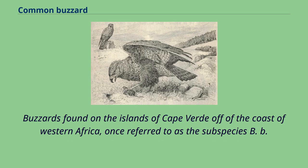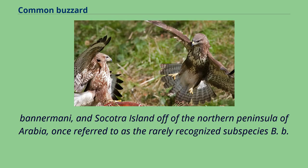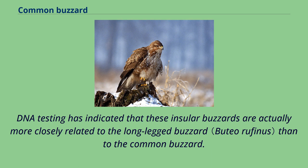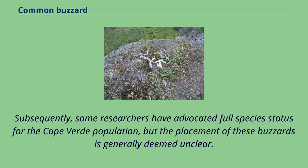Buzzards found on the islands of Cape Verde off the coast of western Africa, once referred to as the subspecies B. b. bannermani, and Socotra Island off the northern peninsula of Arabia, once referred to as the subspecies B. b. socotrae, are now generally thought not to belong to the common buzzard. DNA testing has indicated that these insular buzzards are actually more closely related to the long-legged buzzard than to the common buzzard. Some researchers have advocated full species status for the Cape Verde population, but the placement of these buzzards is generally deemed unclear.